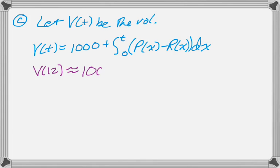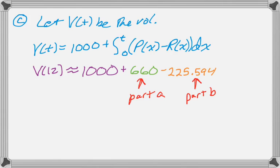And then V of 12 will be 1,000 plus the integral from 0 to 12 of P of x dx is the answer to part A. And then minus the integral from 0 to 12 of r of x dx is the answer to part B. So that's why I would have stored those on my calculator. And that's going to be in cubic feet.